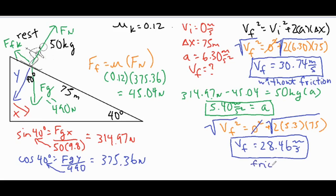To sum up: when working a skier problem, find Fg and break it into components, then use Newton's second law to solve for acceleration. From there, move to your kinematic formulas — we solved for vf, but you could also solve for time or delta x depending on what's given. Plug the values into the right kinematic formula, do a little algebra, and that leads you to your final solution.